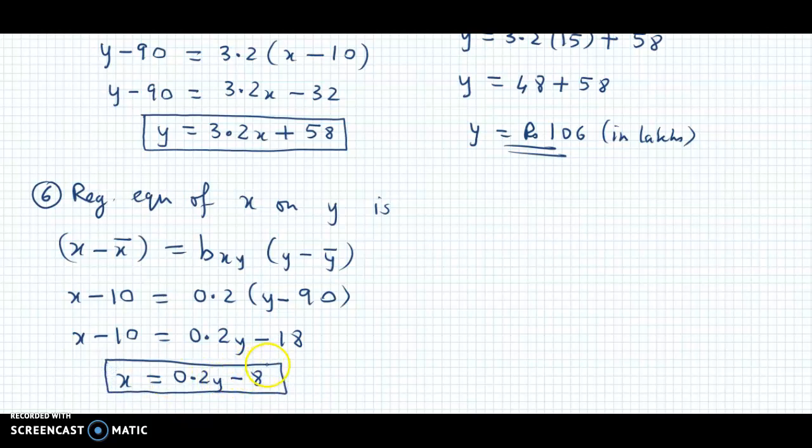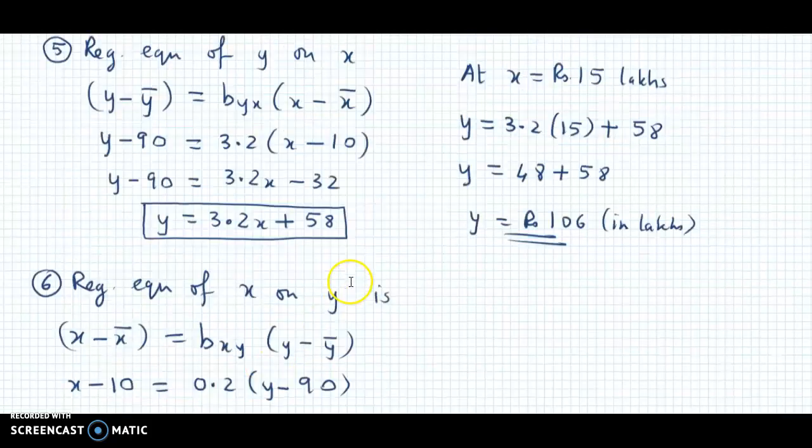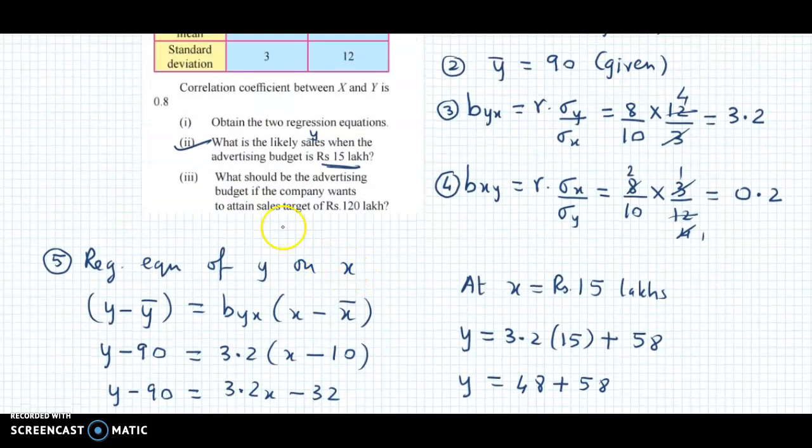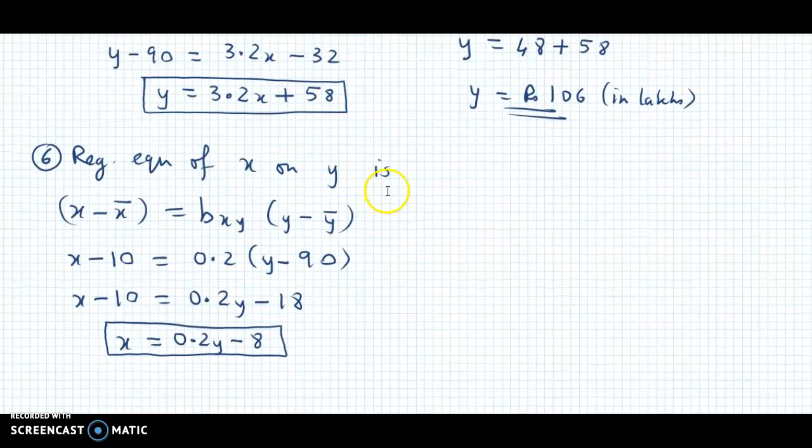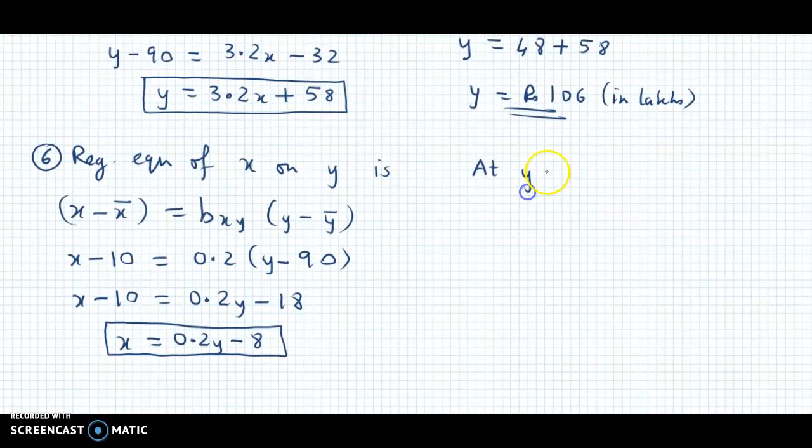Now with this equation's help, we can find the second missing value. This one: what should be the advertising budget if the company wants to attain sales of 120 lakhs? That is, we are given y's value. So we can say at y = ₹120 lakhs.